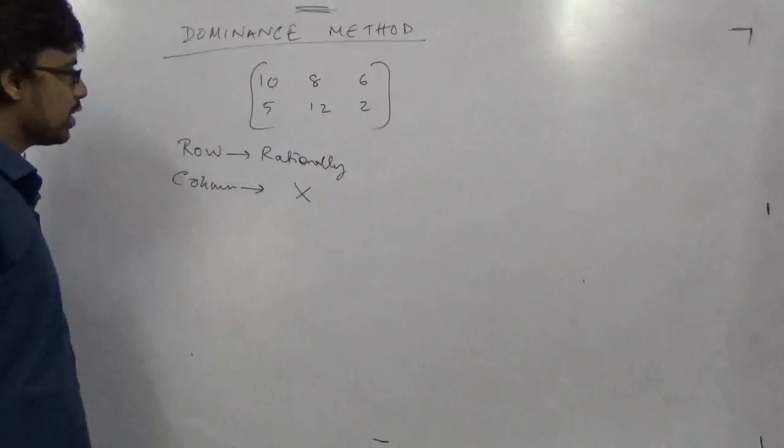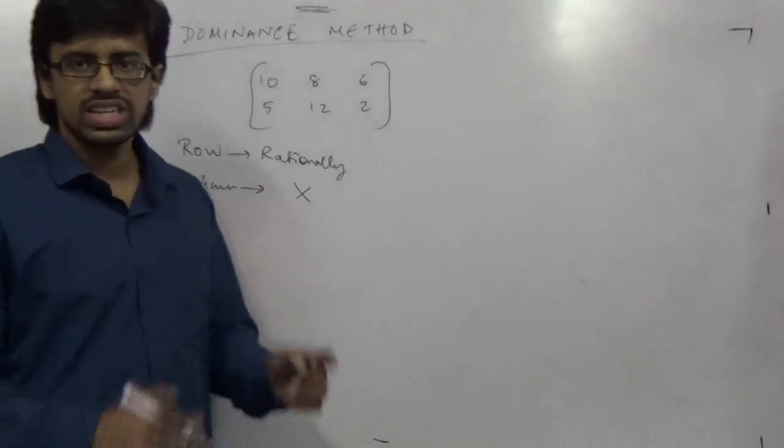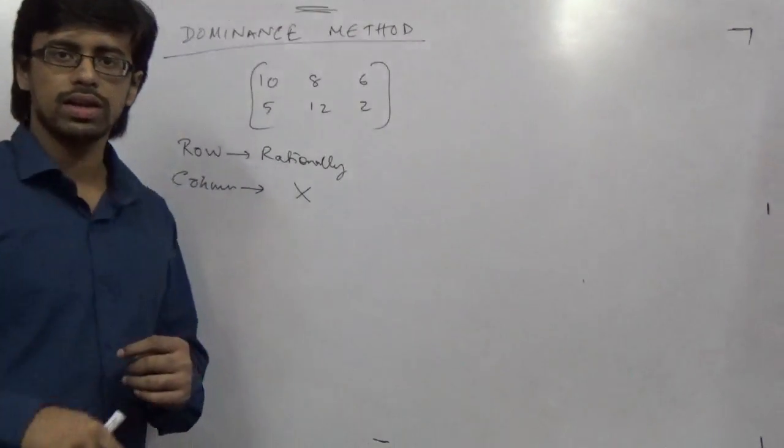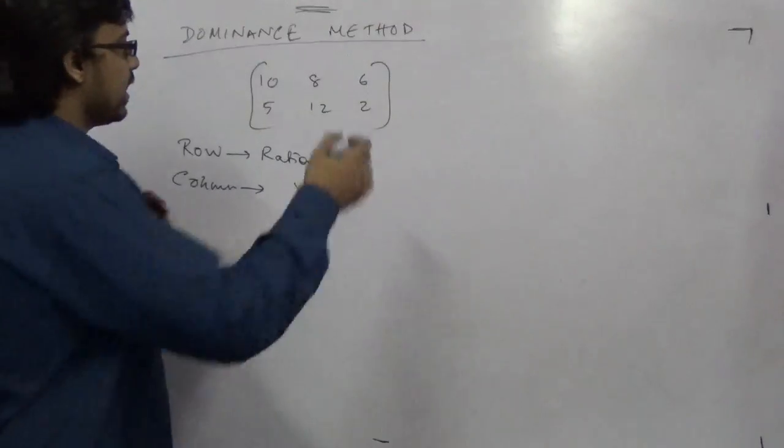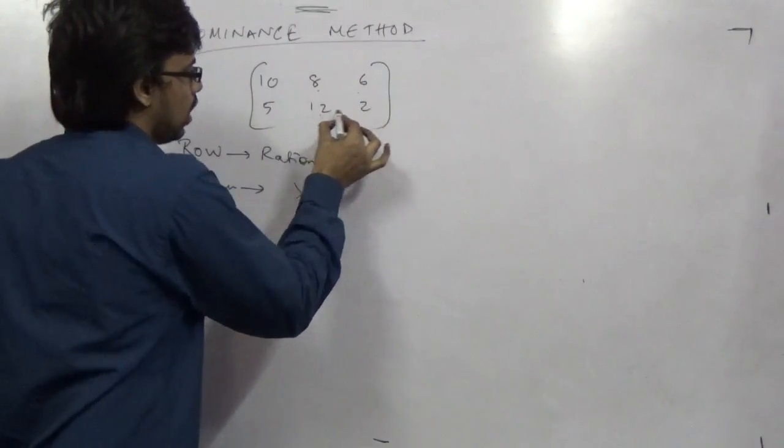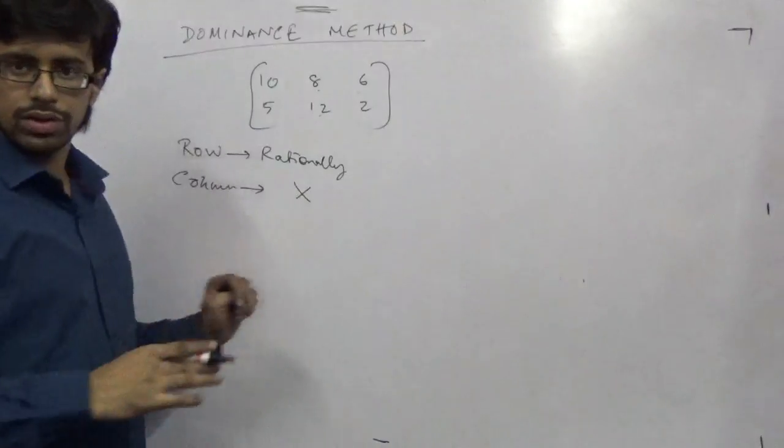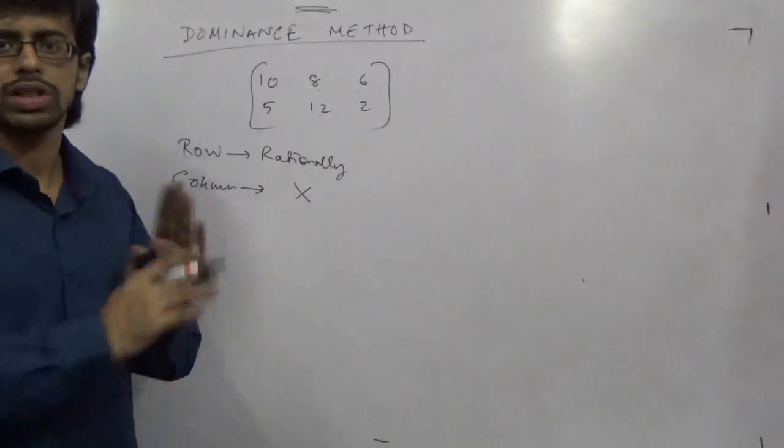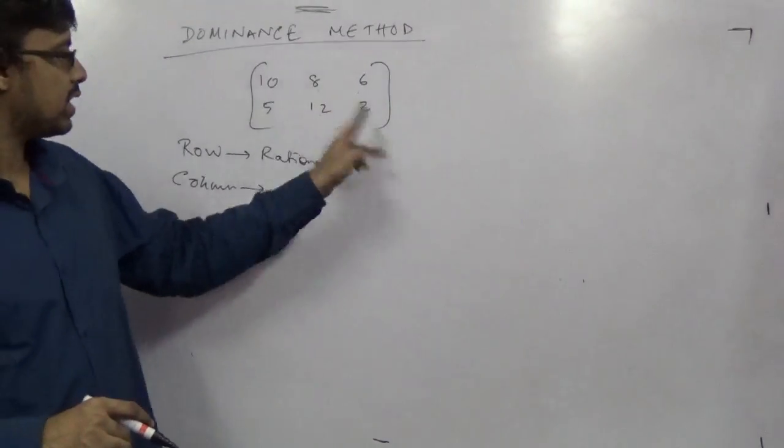Remember that in the dominance principle, each and every value must be greater than the corresponding one. Like 8 is greater than 6, 12 is greater than 2. So there is dominance. If any value is equal, then also it is applicable.